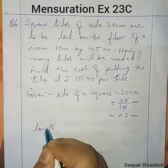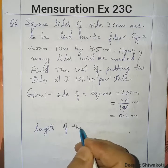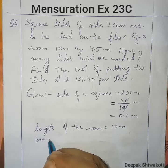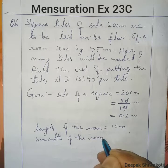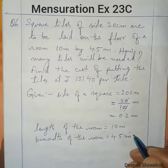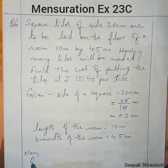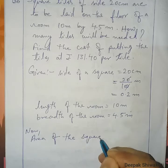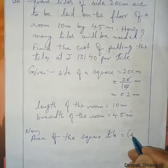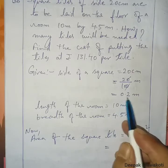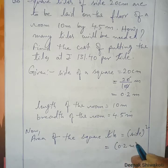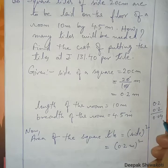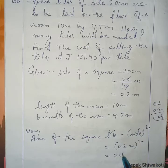Length of the room is 10 meters and breadth of the room is 4.5 meters. Now we have to find the area of the square tile. Area equals side squared. The side is 0.2 meters, so 0.2 × 0.2 = 0.04. The area of one tile is 0.04 square meters.